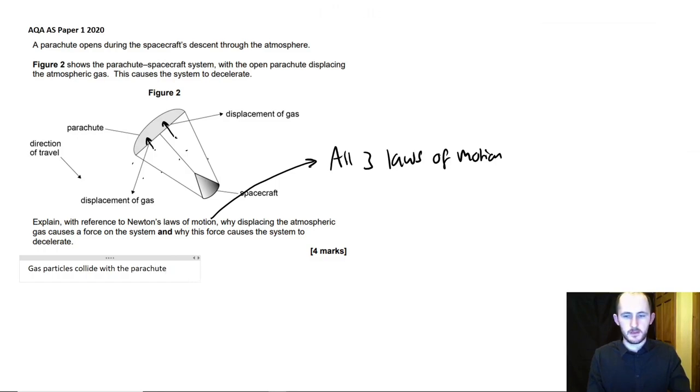So what you can say is gas particles collide with the parachutes. Due to Newton's third law, and again, I'm going to bullet point, this causes the parachute to exert a force on the gas particles. So that'd be my first bullet point.